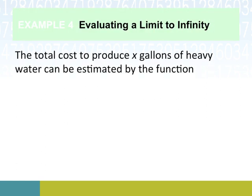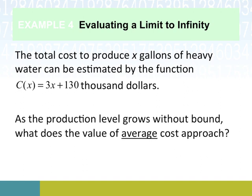Okay, so this might look familiar if you watched the first video for this section. So revisiting this example where we're producing heavy water used for nuclear reactors, we're going to have a cost function of 3x plus 130, that's in thousands of dollars. And instead of asking, if you recall what we did before approaching some finite value of production levels, I think it was 10 gallons that we were looking for. What happens as our production level grows without bound?